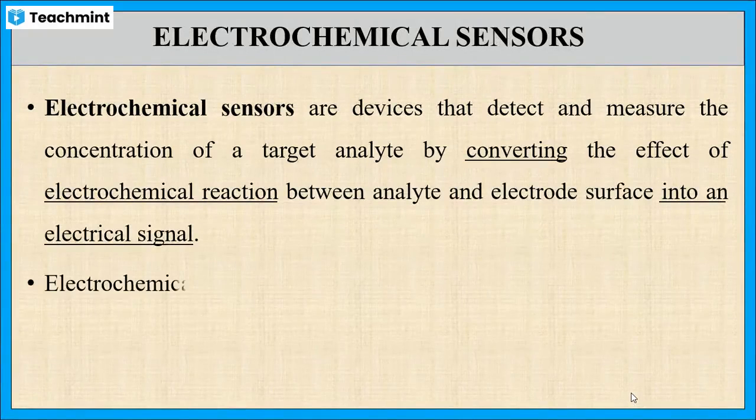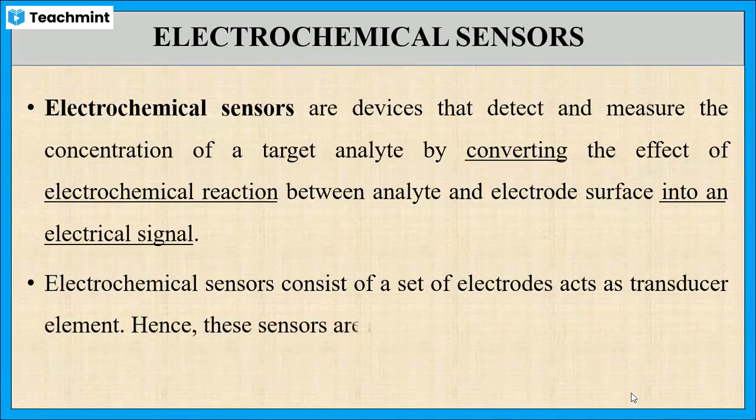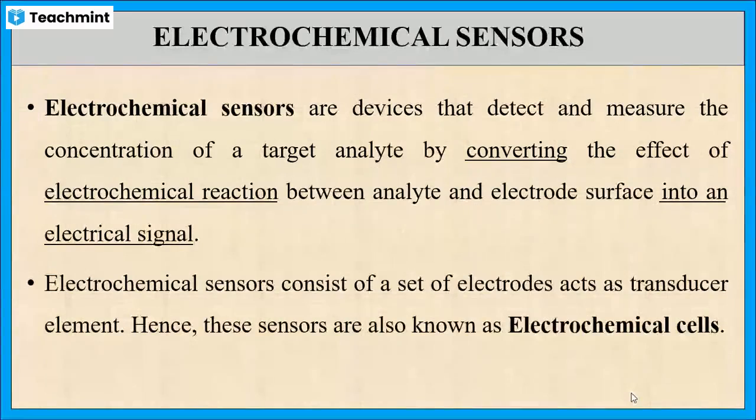Usually, electrochemical sensors consist of a set of electrodes that act as transducers. Hence, this type of sensor is also known as electrochemical cells.